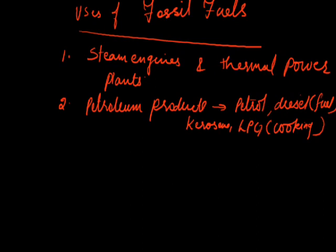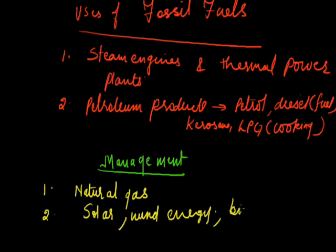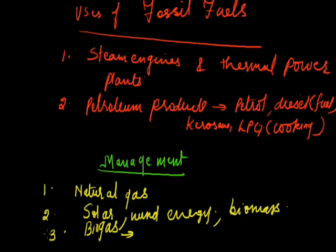Biogas can also be used for various purposes. The various ways of management of fossil fuels include: first, use of natural gas as a substitute; second, alternate non-conventional energy sources such as solar and wind energy; and third, biomass energy and biogas, which can be used for cooking and even for vehicles. These are the three important methods of management of non-renewable resources of energy — petroleum and coal. Thank you, children.